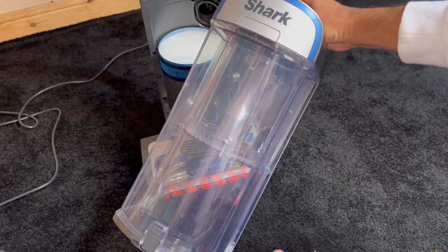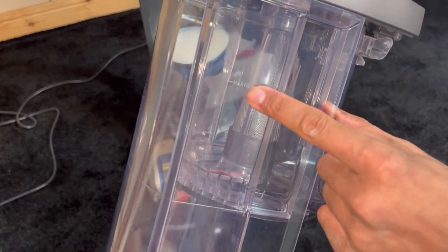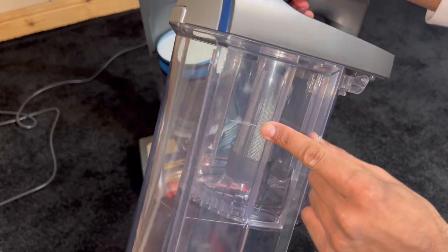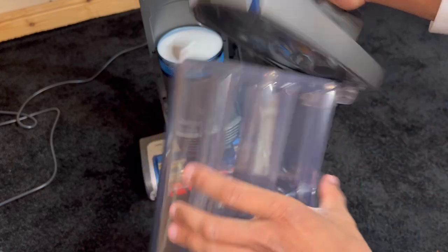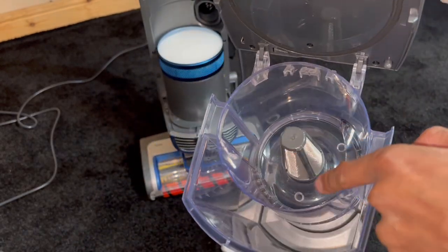What I like about these Sharks as well, you can fill the bin right up to the top before you need to empty it. Yes, it says the max fill line is there, but you can get away with emptying it up to about here because that's where the cutout is before dirt actually builds up in the cyclone area.